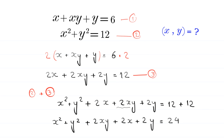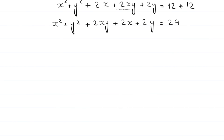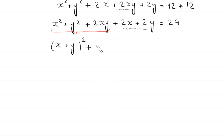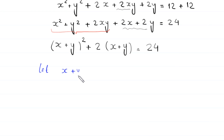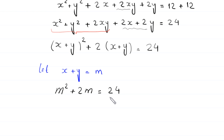We regroup: x squared plus 2xy plus y squared gives us (x plus y) whole squared, and factoring out 2 from the remaining terms gives 2(x plus y), so we have (x plus y) squared plus 2(x plus y) equals 24. We let x plus y equal m.